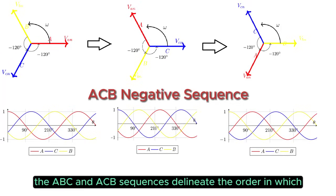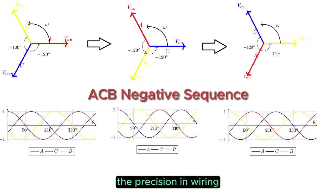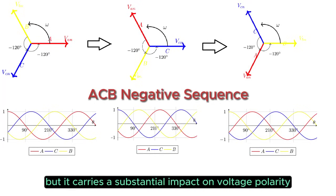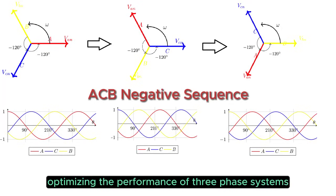To sum it up, the ABC and ACB sequences delineate the order in which voltages unfold in a three-phase system. The precision in wiring configurations might appear subtle, but it carries a substantial impact on voltage polarity. Understanding these phase sequences is fundamental in optimizing the performance of three-phase systems.